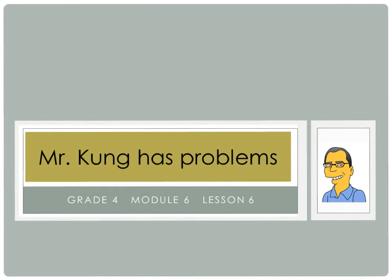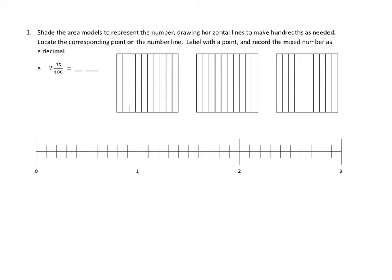Well, we're going to do four problems together tonight, and hopefully that'll give you a toehold so that you can climb up and scale the rest of the homework mountain tonight. Okay, let's take a look at one of the problems. Problem number one. We are going to shade the area models to represent the number, drawing horizontal lines to make hundreds as needed. Locate the corresponding point on the number line, label with a point, and record the mixed number as a decimal. Oh, my goodness. Well, we've got so much to work on here.